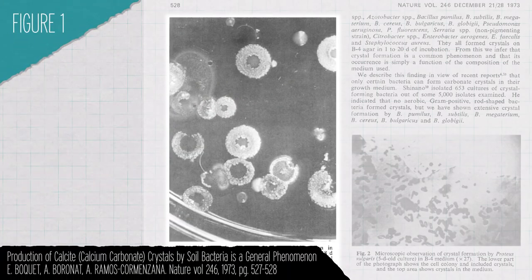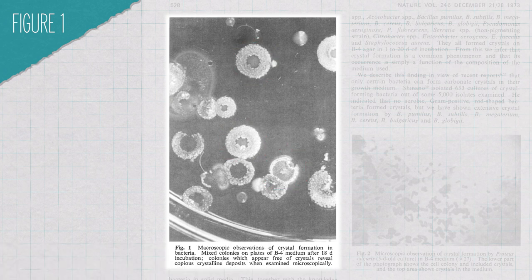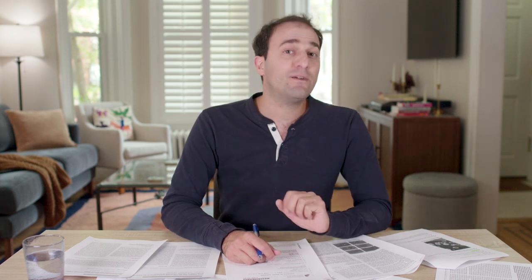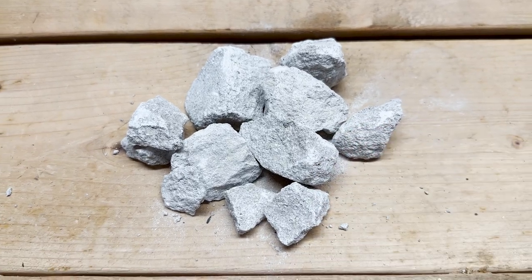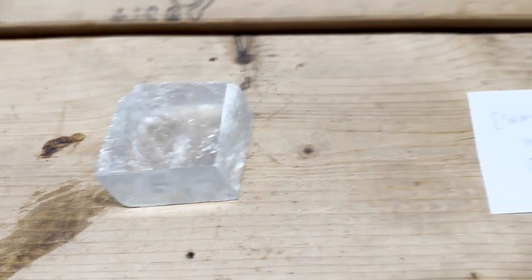Let me take you back to 1973, to this very short Nature paper that at first seems like it has absolutely nothing to do with concrete. But let's look at figure one. These are bacteria growing on a petri dish. These white circles at first might look like sugar crystals, but they're not. When the chemists who wrote this paper analyzed this material, they discovered that it was calcite, a mineral that is one of the two main forms of calcium carbonate and one of the two main components of limestone.